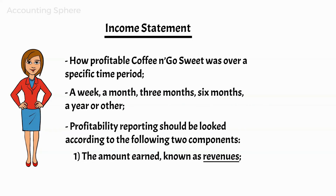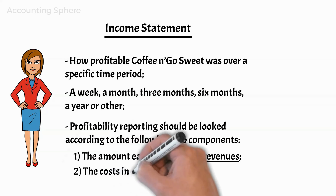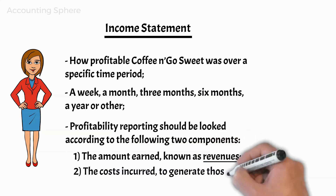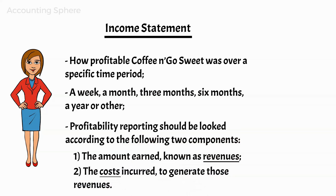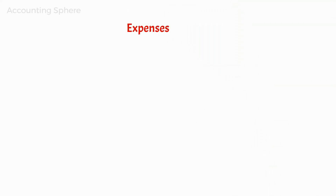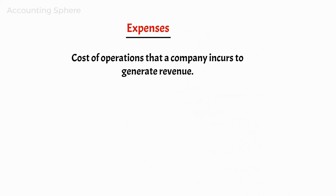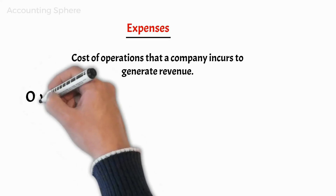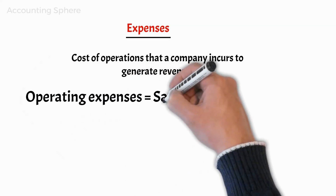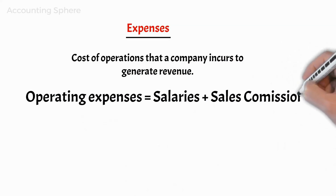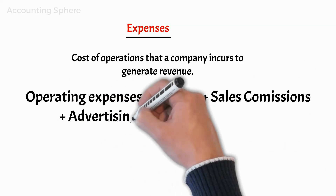Now, Marianne moves on to explaining the second component for profitability reporting. Two: the costs incurred to generate those revenues, known as expenses. An expense is the cost of operations that a company incurs to generate revenue. As the popular saying goes, it costs money to make money. In order to maximize profits, a company needs to keep expenses under control while increasing their revenues. Common expenses include payments to suppliers, employee wages, factory leases, and equipment depreciation.